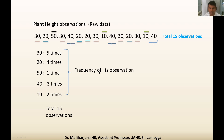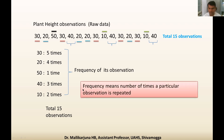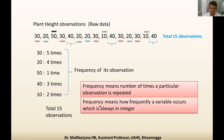These counts are known as the frequency of each observation. Observation 30 has frequency 5, observation 20 has frequency 4, observation 50 has frequency 1, frequency 3 is for observation 40, and frequency 2 is for observation 10. Frequency means the number of times a particular observation is repeated — how frequently a variable occurs — and it is always an integer.